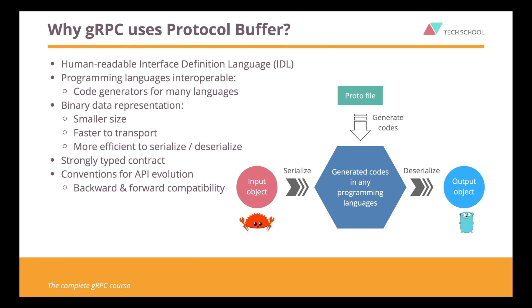And it has a great set of rules for API evolution to ensure backward and forward compatibility. But is protocol buffer required to work with gRPC? The answer is no — you can use Google Flatbuffers or Microsoft Bond instead.